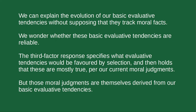Our basic evaluative tendencies are inculcated by evolution, and the evolutionary explanation for them doesn't appeal to moral facts. So we wonder whether our moral beliefs — based on these basic evaluative tendencies — are reliable. The third factor response accepts the evolutionary claim, then asks what basic evaluative tendencies would be selected, specifies certain tendencies that would be favoured by natural selection such as 'survival is good', and then argues that these are true per our moral judgments. So the third factor realist is testing the basic evaluative tendencies that would be selected against our intuitive moral judgments. But those intuitive moral judgments are themselves derived from basic evaluative tendencies shaped by evolution. So Horne worries that this is objectionably circular.